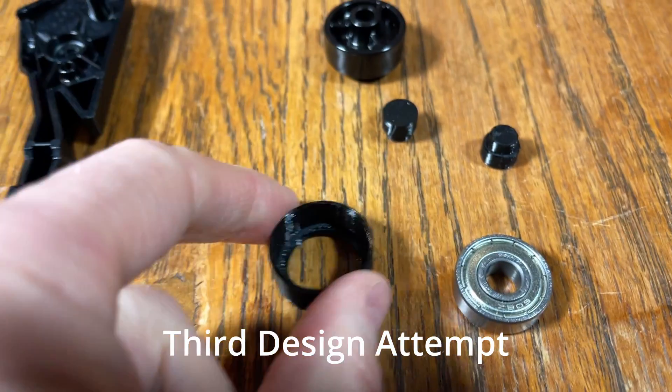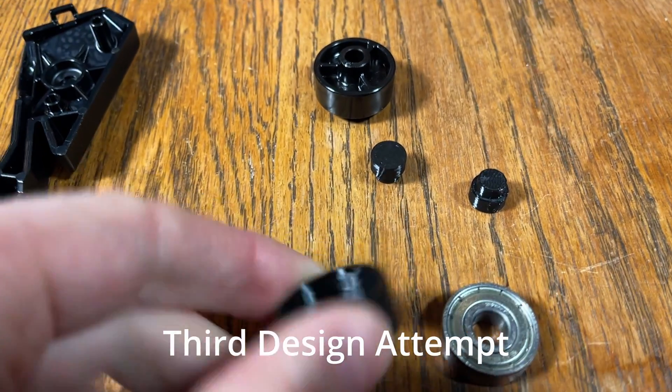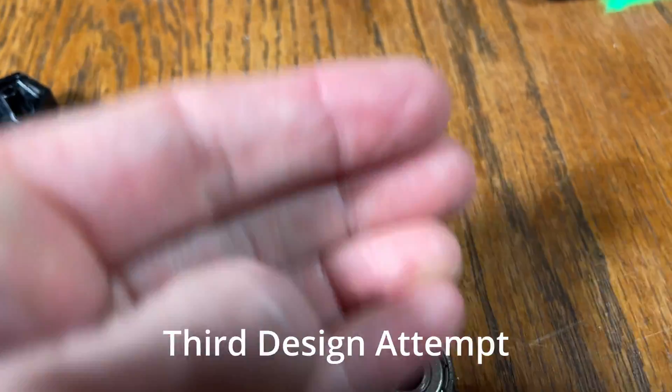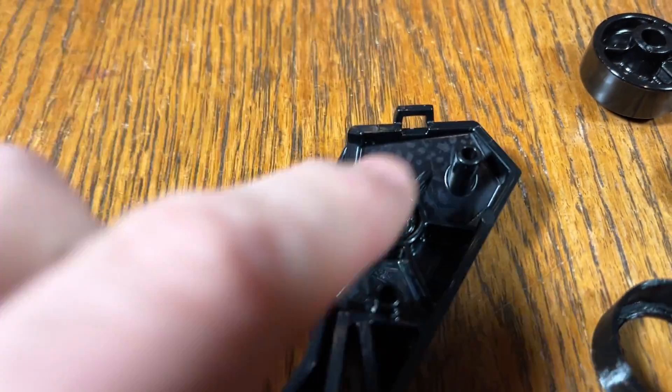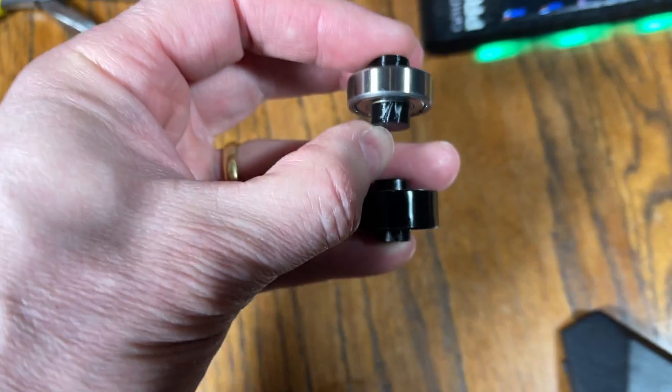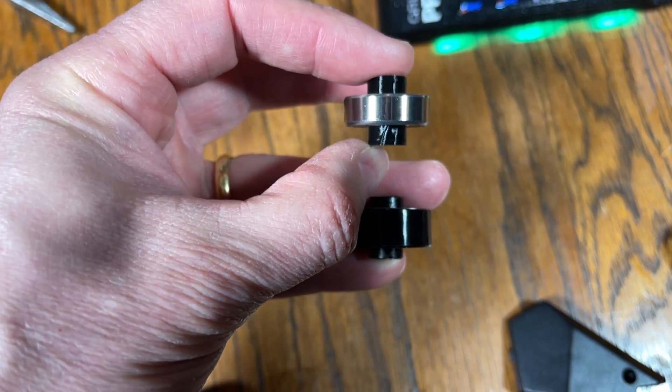Okay here's the next iteration. So we've got a higher wall now so we don't have to print supports and that's going to go in here. So they're roughly the same width now like that.